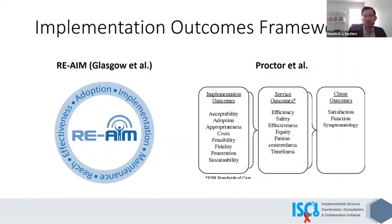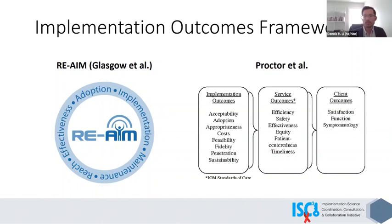Many are probably familiar with one or both of these implementation outcome frameworks. Russ Glasgow's RE-AIM model has been used for several decades to conceptualize and quantify public health impacts of various evidence-based interventions. And in 2011, Proctor and colleagues published a really seminal article detailing these eight implementation outcomes — acceptability through sustainability — and also showed how these implementation outcomes relate to outcomes further downstream: the quality of service delivery in the service outcomes, adapted from the IOM standards of care, and more distally the client or patient level health outcomes. Both of these frameworks are widely used in implementation evaluations today and form the basis of the tool we will be presenting.